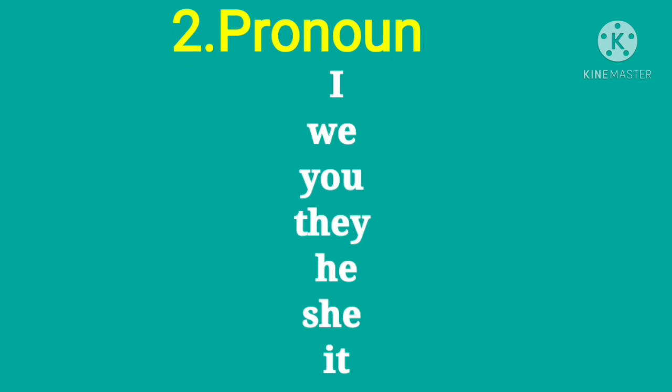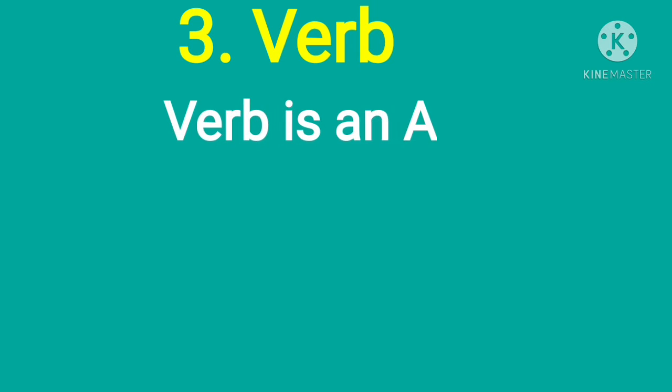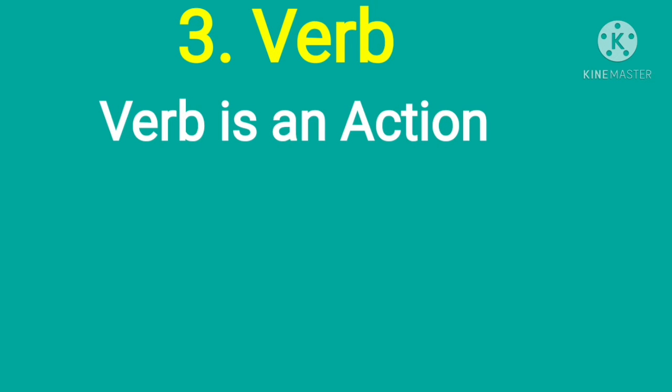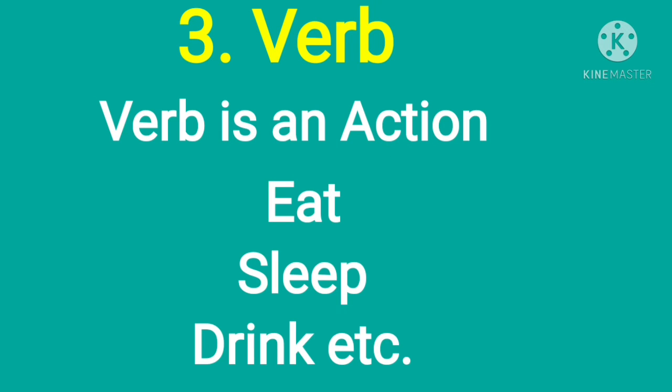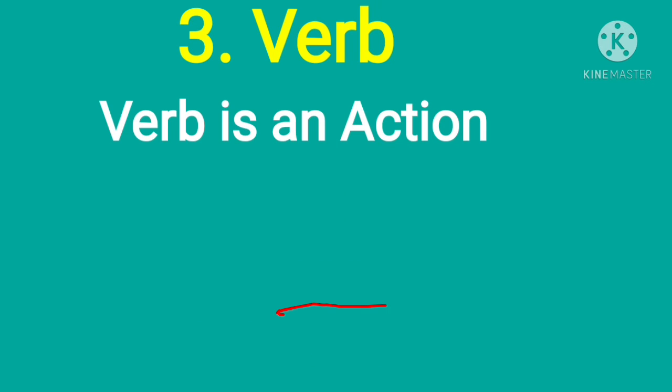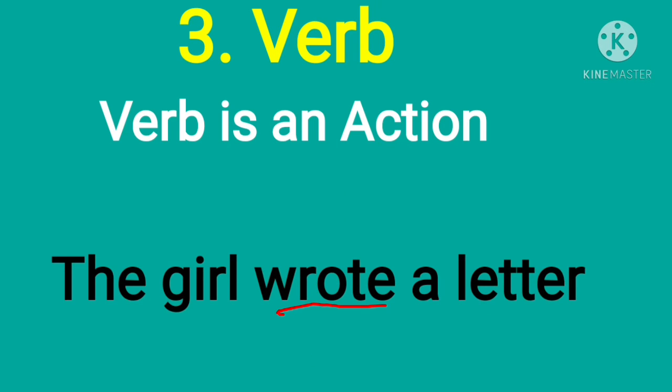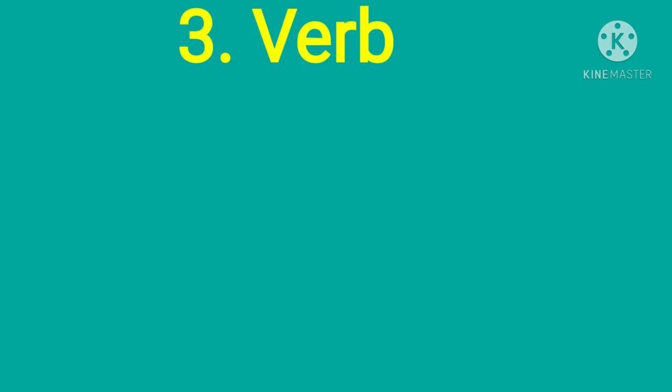Let us talk about the third one, that is verb. What is a verb? A verb is an action. We have to focus on the word action. For example, there are so many verbs: eat, sleep, drink—these are actions, right? The girl wrote a letter to her cousin. This is the example.